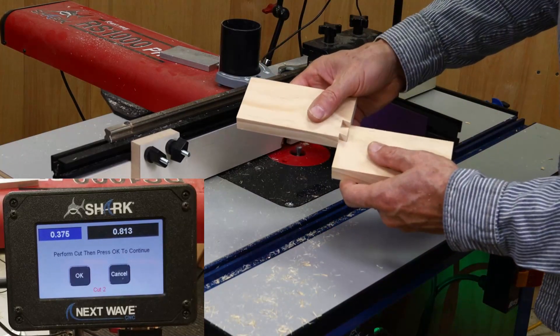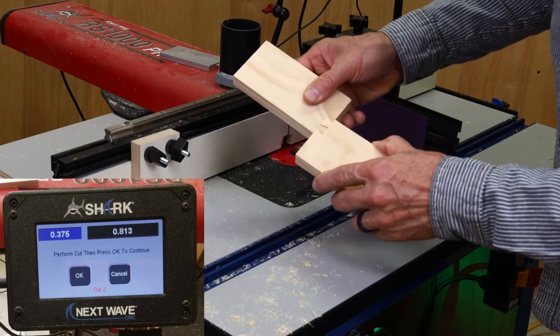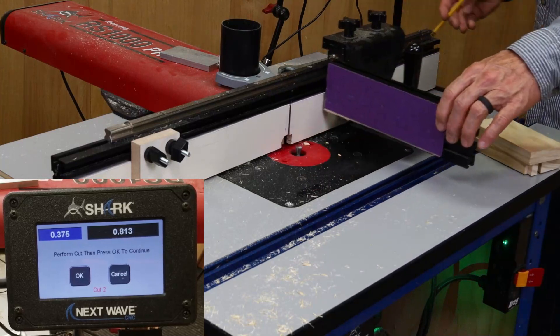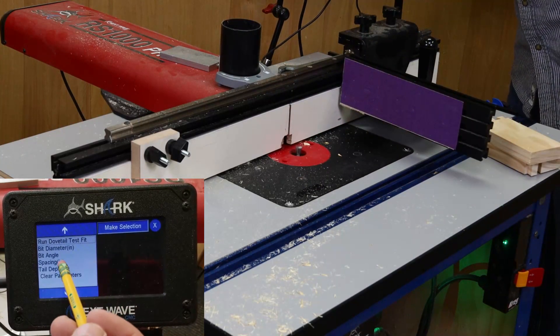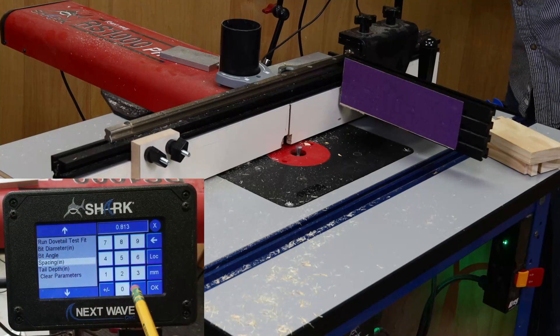Checking the fit shows that the spacing is too loose. So to tighten the fit, I go back into the app and increase the spacing a small amount, and re-run the cut on the other ends of the board.